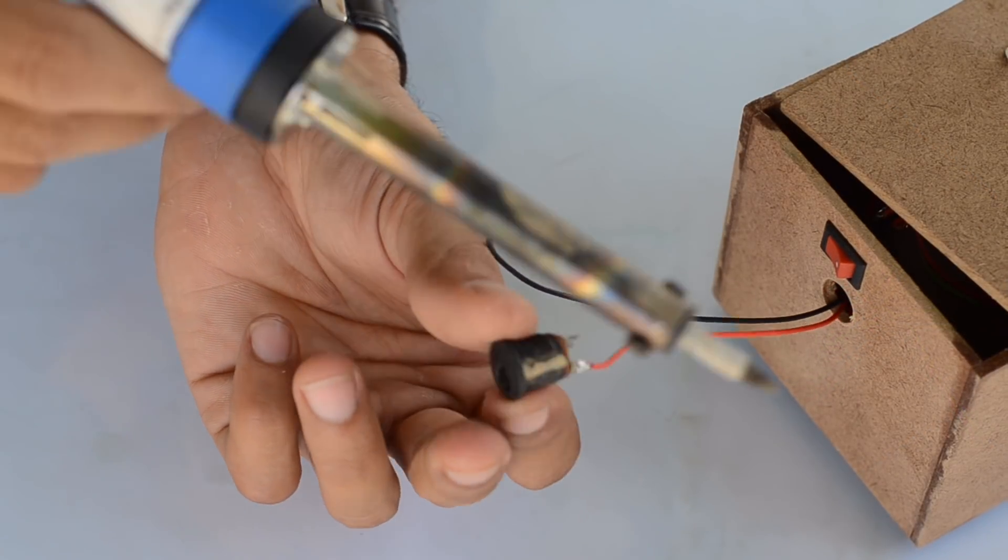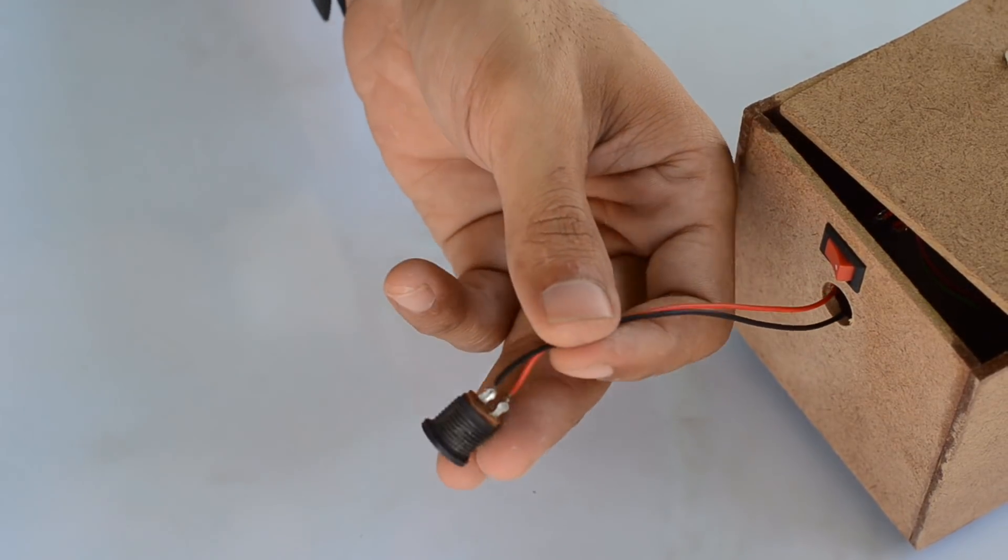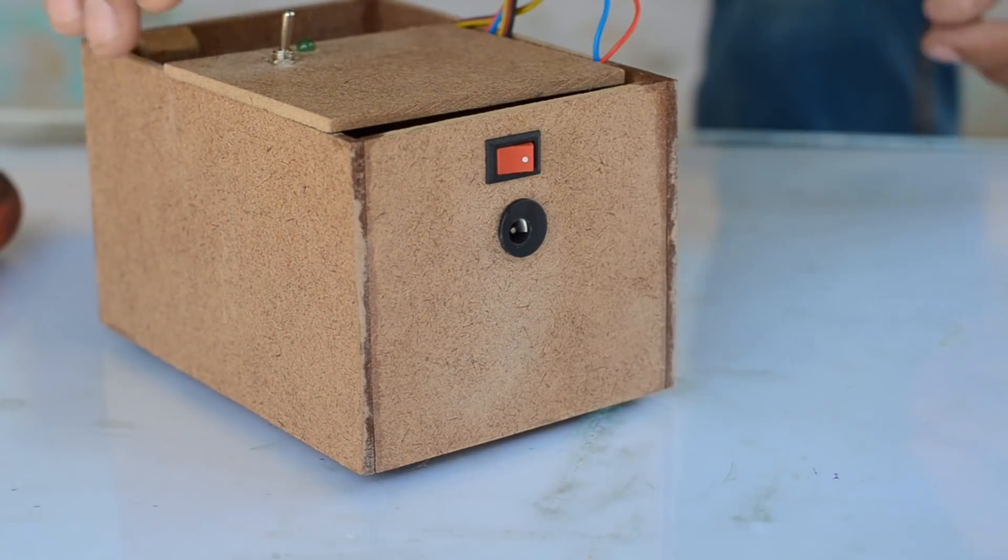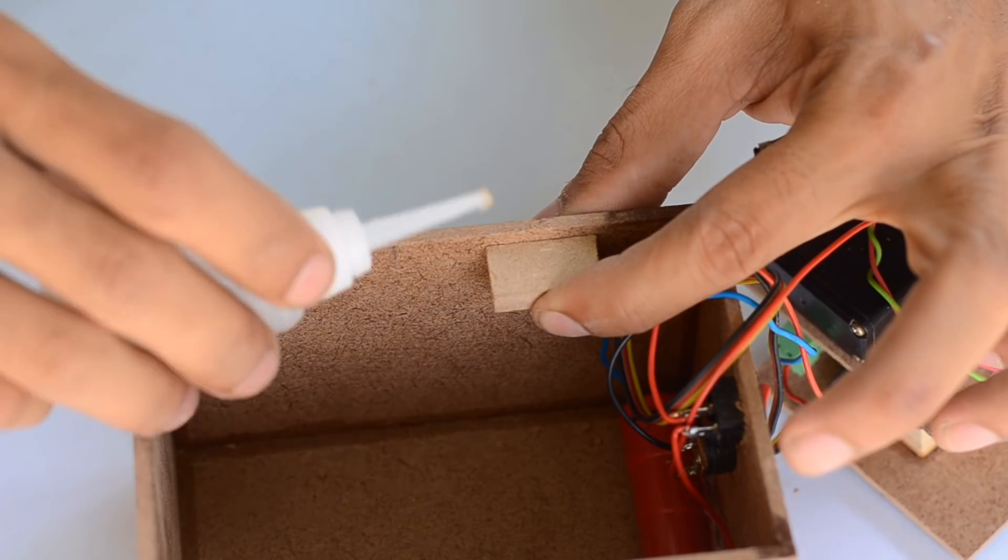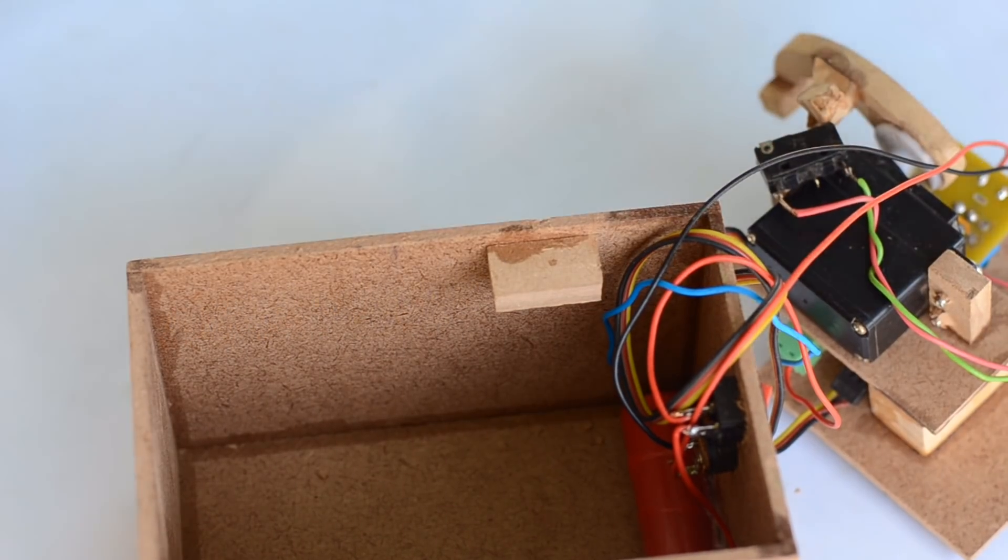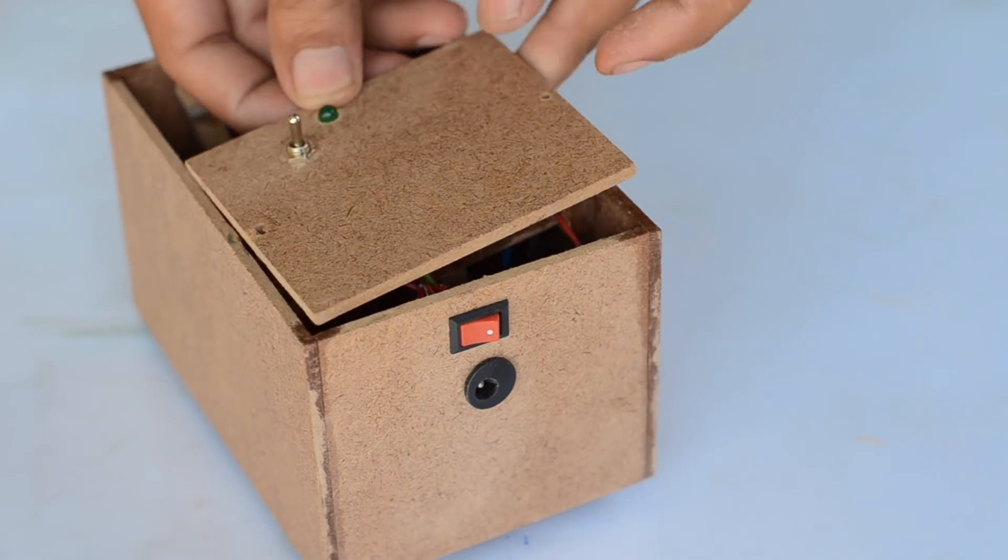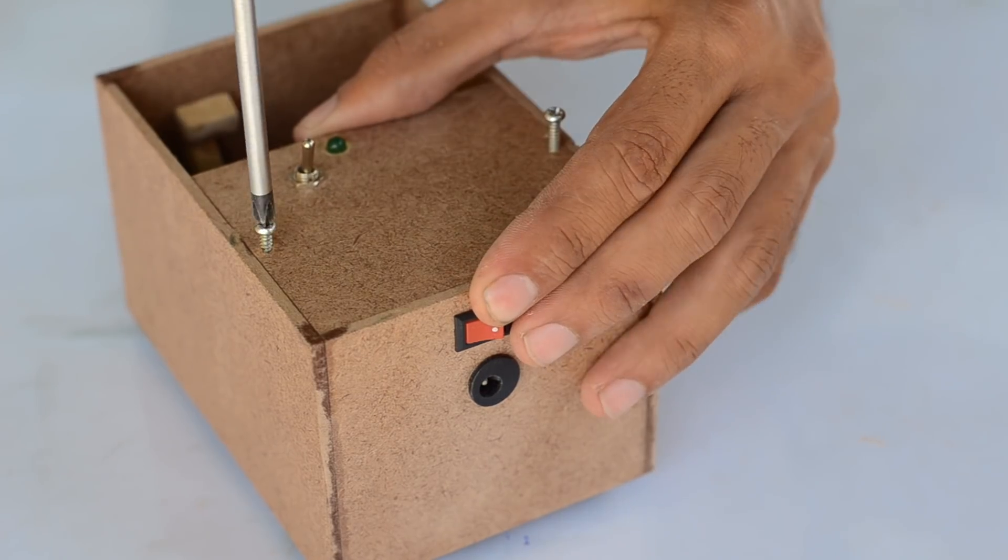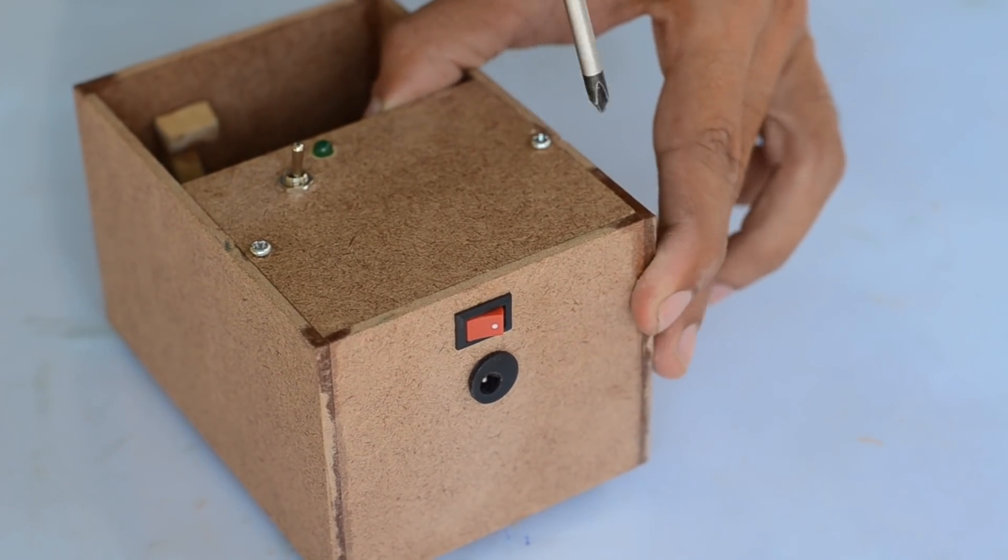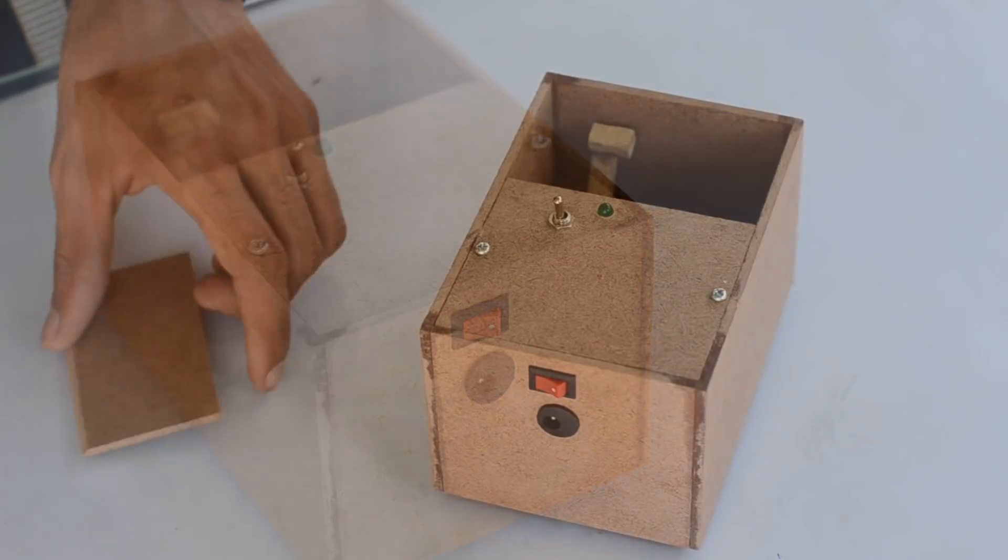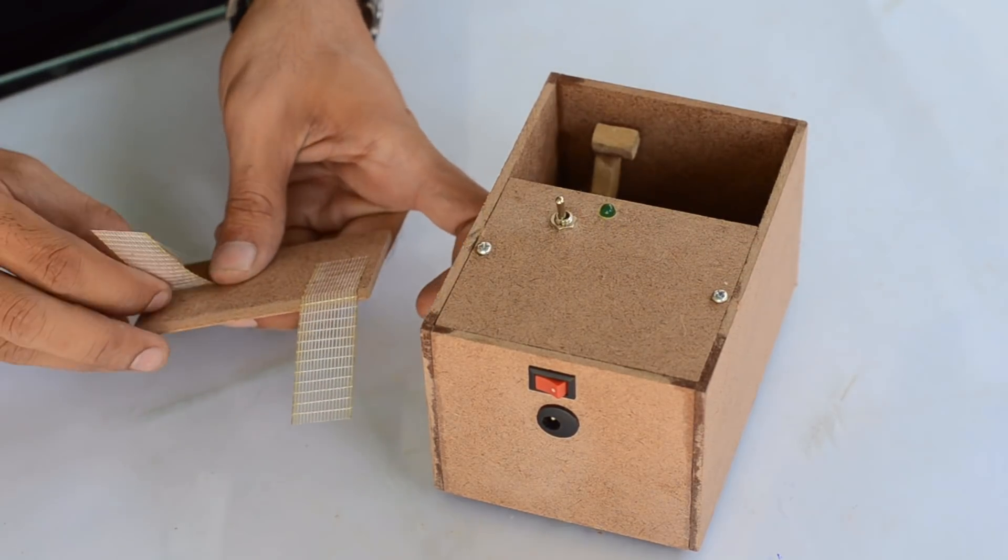Later I connected the charging jack to the PCB and mounted the top plate using some cut screws. The other half of the top plate is mounted onto the box using some fiberglass tape.